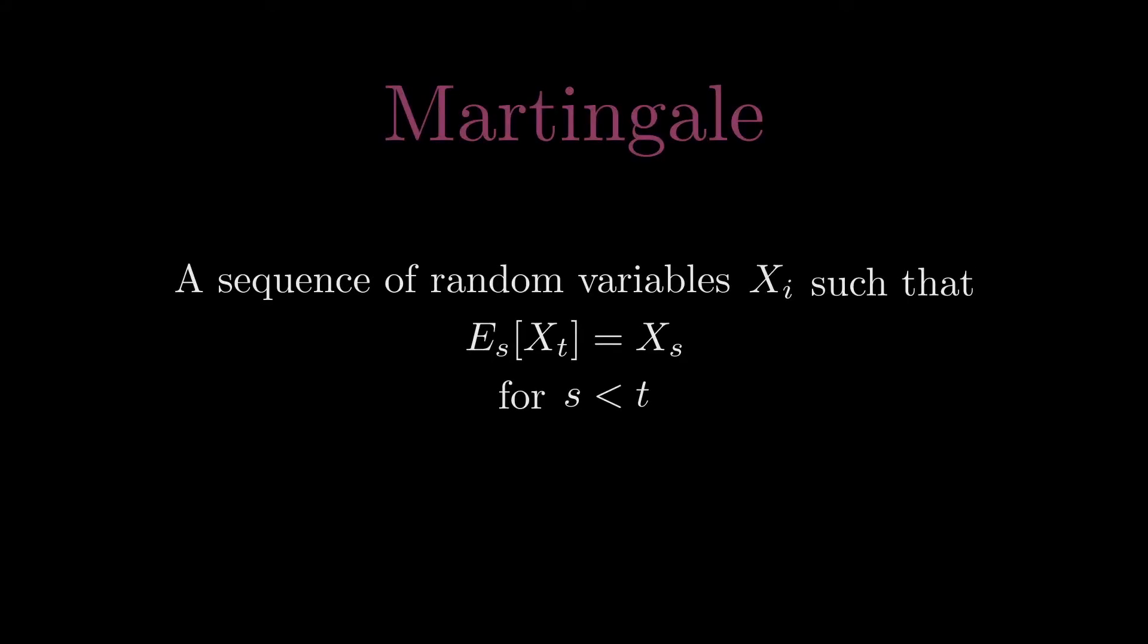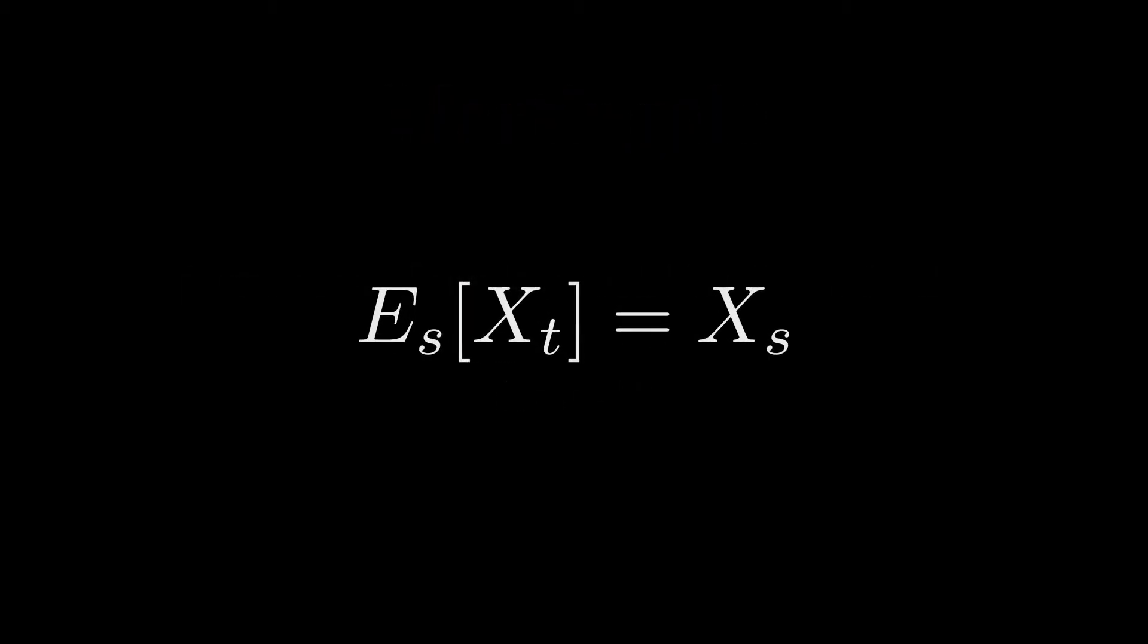The definition of a martingale is pretty simple. I have it right here. You're probably here because you have no idea what this statement means. In particular, what in the world is this S doing here? Why is the right-hand side a random variable? And most importantly, why do we care?